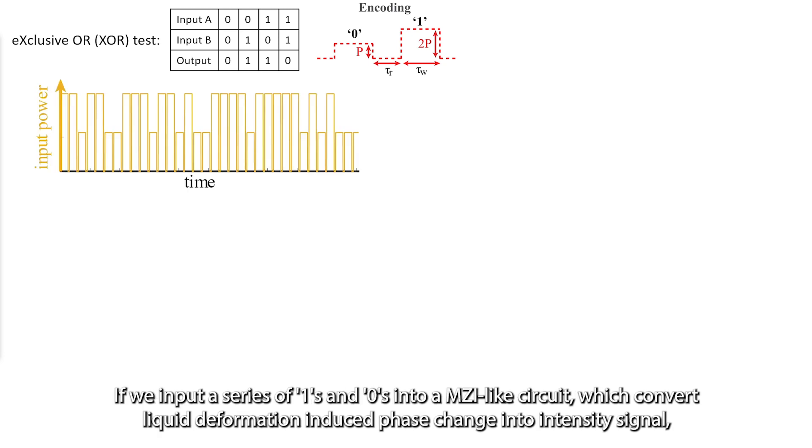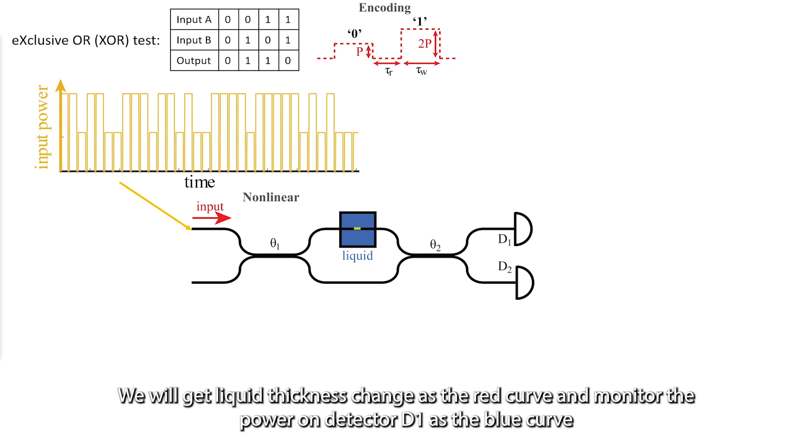If we input a series of 1s and 0s into an MZI-like structure, which converts liquid deformation-induced phase change into intensity signal, we will get liquid thickness change as the red curve and monitor the power on detector D1 as the blue curve.